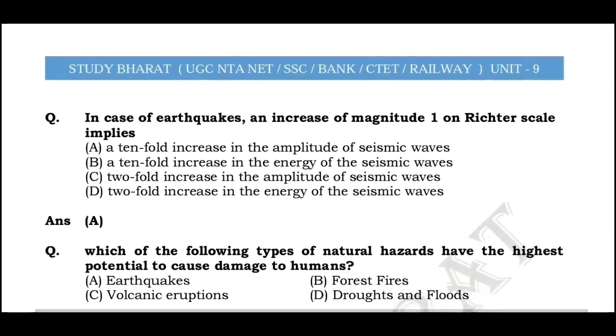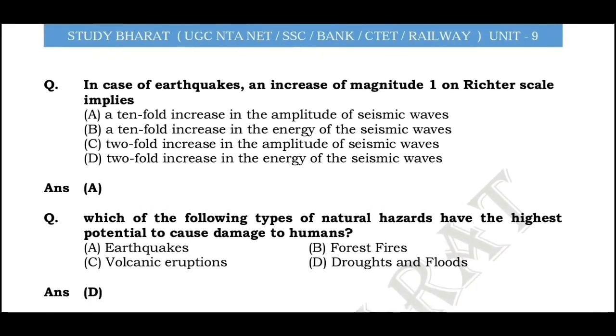Which of the following types of natural hazards have the highest potential to cause damage to humans? The answer is D: drought and flood.